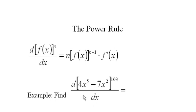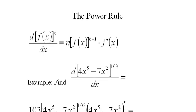A nice example of this is the derivative of (4x^5 - 7x^2)^103. Now, you wouldn't want to multiply this thing out. It would take you quite a long time. But it's very simple with the power rule.